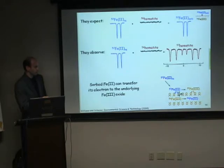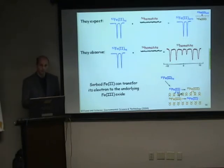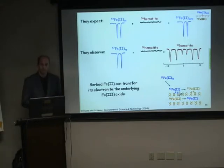When Fe2+ sorbs onto the iron oxides, it does not stay stable. Instead, it injects its electron to the underlying oxide iron, and on the surface it gets oxidized to Fe3+ and continues the underlying structure of the hematite. They showed this on a number of other iron oxides as well.